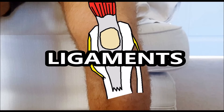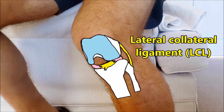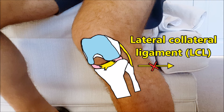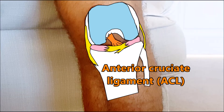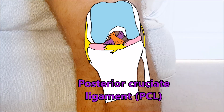The ligaments of the knee: there is the patella, and then there are the collaterals. The lateral collateral prevents lateral movement of the tibia, and then there is the medial collateral, which prevents medial movement of the tibia. Then there are the cruciates, which connect the tibia to the femur. The anterior cruciate prevents anterior movement of the tibia.